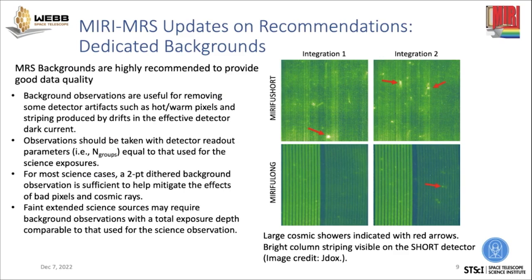A background observation should be taken with the same detector readout parameter — the same number of groups — that's useful for your science exposure. For most science cases, just a two-point dither in the background will be good enough to help mitigate these effects. But if you're looking at really faint, extended science sources where you want to get down into the noise, then you might need a total background exposure depth comparable to your science exposure.